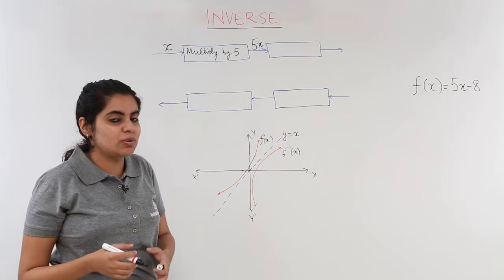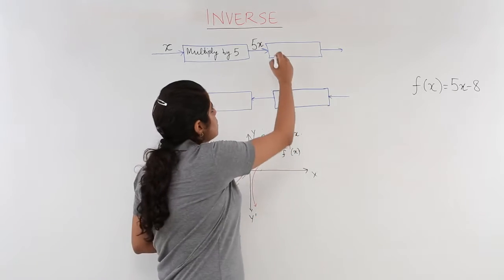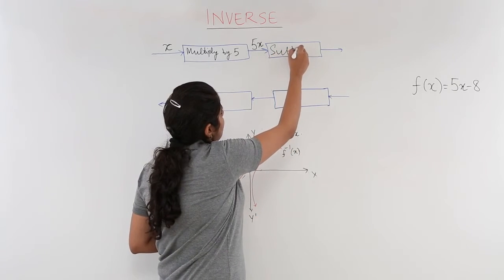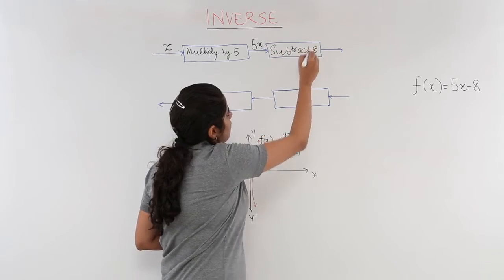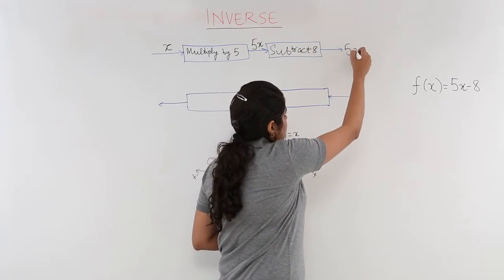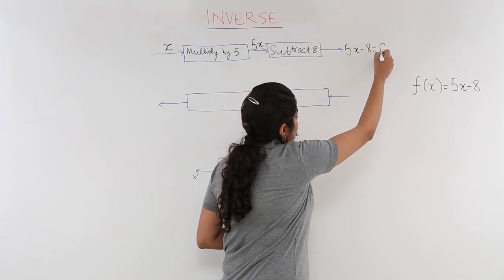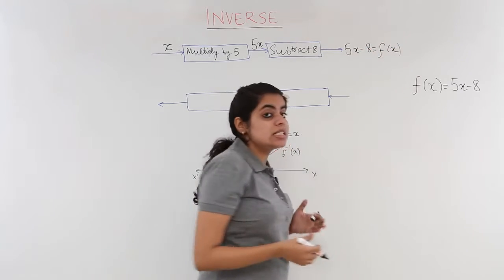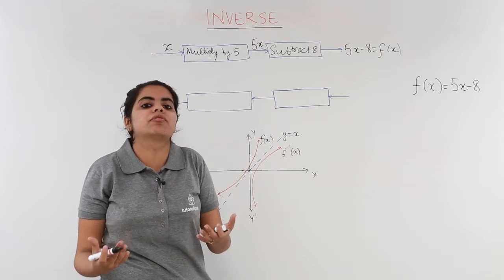And after we get 5x, I want 5x - 8. So I need to subtract it. So I will be subtracting it and hence I get 5x - 8, which is nothing but my f(x). This is the story of how to frame a function, how do we get a function.